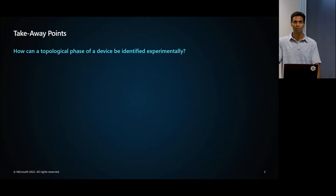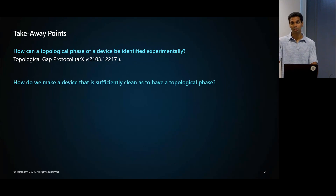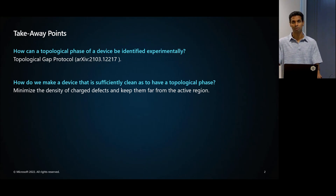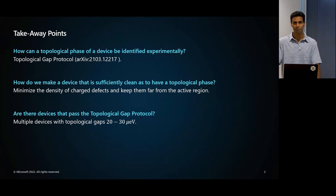First, how can a topological phase of a device be identified experimentally? In the particular case of topological superconductivity in nanowires, I'll argue that's the topological gap protocol. Second, how do we make a device that's sufficiently clean as to have a topological phase? The main enemy is disorder. The key is to minimize the density of charge defects and keep them as far from the active region as possible. And lastly, are there devices that pass the topological gap protocol? Yes—we do have multiple devices with topological gaps in the range of 20 to 30 microvolts passing the topological gap protocol.